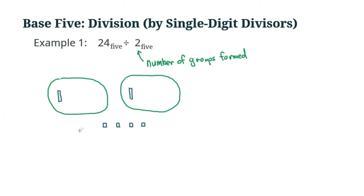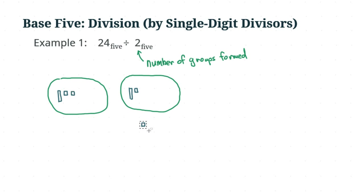We have no more longs, so now we are going to deal with the units. You can probably already see what the answer is — we have four units and two groups, so each group will have two units. But let's do the moving anyway: one unit goes here, one unit goes here, one unit goes this side, and the other unit goes this side. This is just like distributing candies to your kids — you need to make it fair. Each group has the same amount of pieces and now there are no more pieces left.